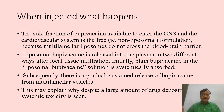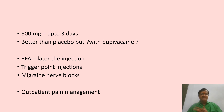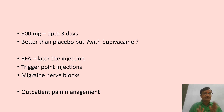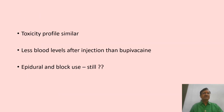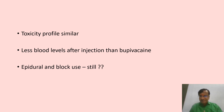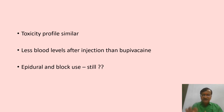Liposomal bupivacaine contains 600 mg of bupivacaine total, releasing approximately 200 mg per day. It is better than placebo and allows planning of nerve blocks — for example, intercostal neuralgia blocks — with awareness of cost. Blood levels after injection are lower compared to plain bupivacaine, improving the safety profile, though cost remains a limiting factor for widespread use.